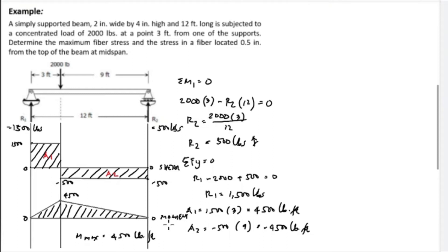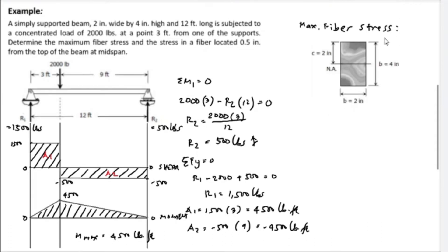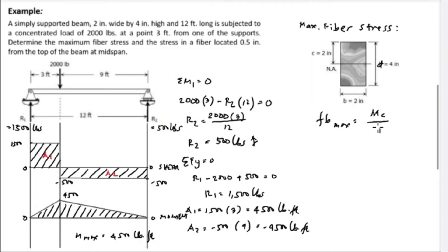The maximum moment M is equal to 4,500 pound-feet at the location of the concentrated load. For the maximum fiber stress, based on the beam size: the base b is 2 inches, depth d is 4 inches, and C — the distance from the neutral axis to the top — is half the depth, equal to 2 inches.